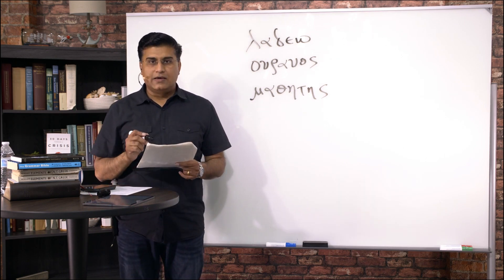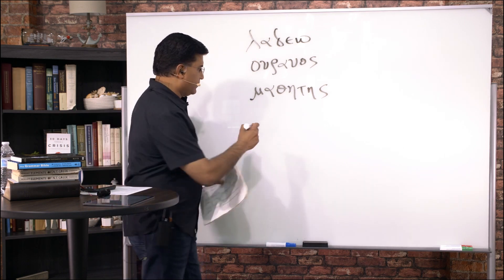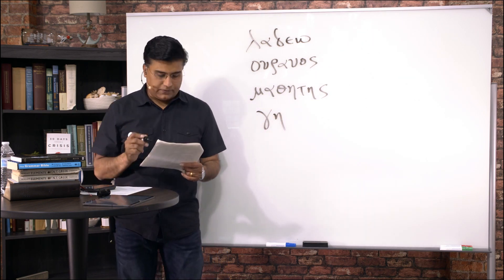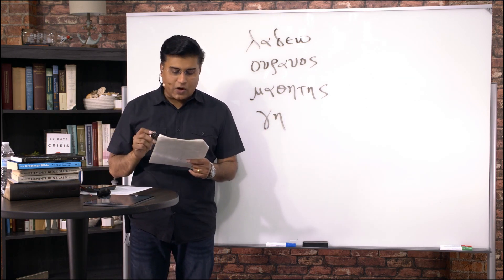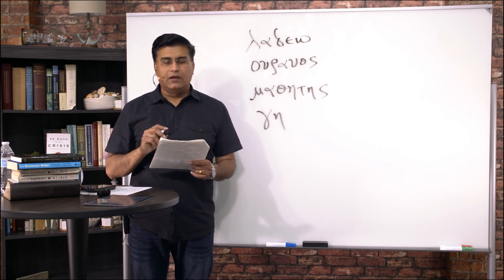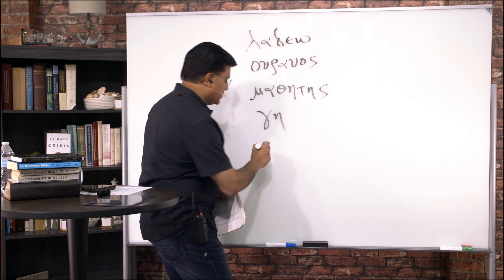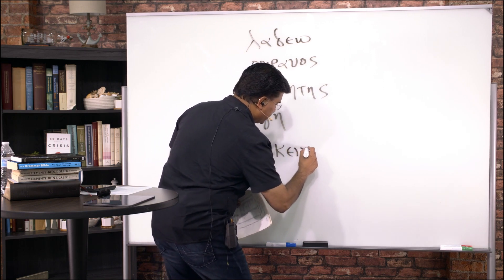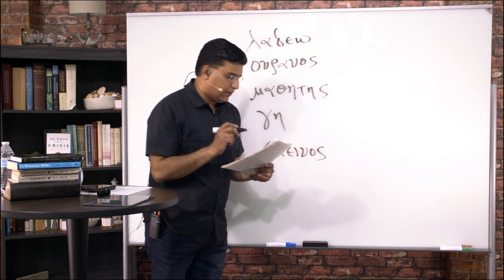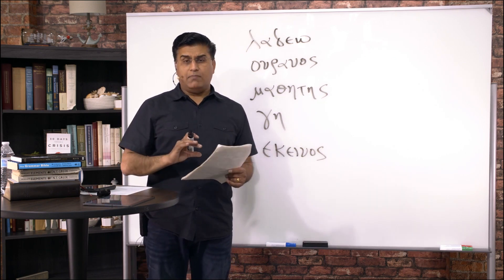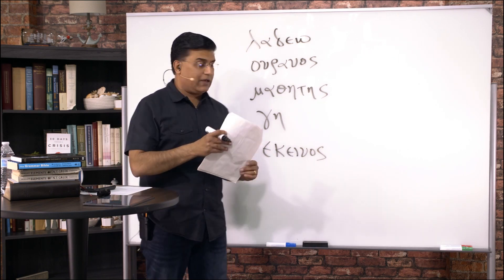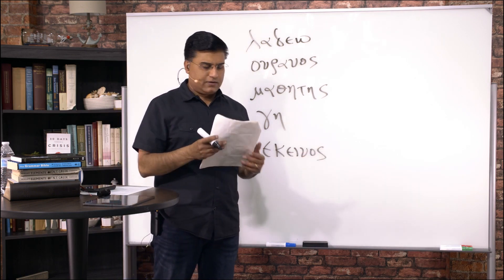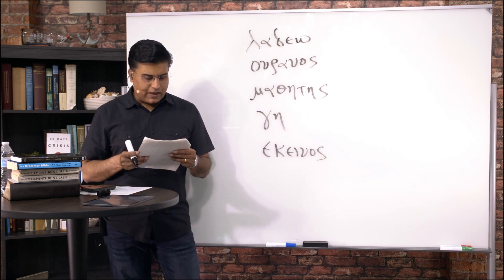Gay, earth. Gay, earth. Ekanos, that one. Ekanos, that one. Ekanos, that one. Now, again, keep in mind modern and koine pronunciation. Ekanos is no K, maybe a K. Ekanos, that one.